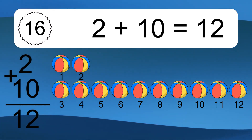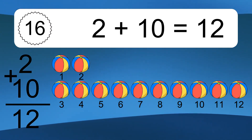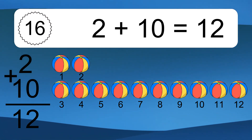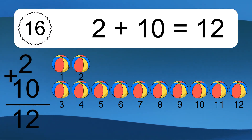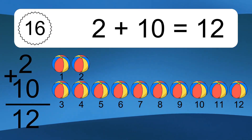2 plus 10 equals what? 1, 2, 3, 4, 5, 6, 7, 8, 9, 10, 11, 12.